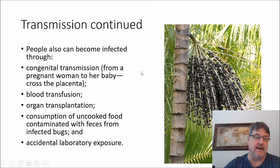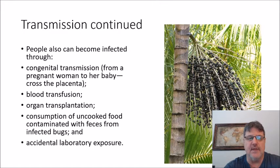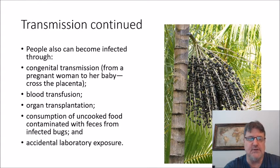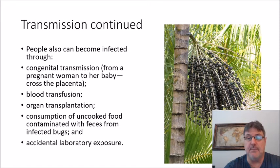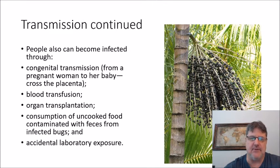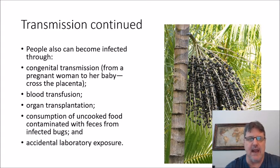You can also become infected through congenital transmission, because this parasite can cross the placenta — from the pregnant woman to her baby. Blood transfusion, organ transplants, and consumption of uncooked food contaminated with feces from infected bugs are other routes. We see this in South America where people become infected after eating açaí berries — the bugs get squashed into juice and the feces are ingested. Accidental laboratory exposure is also possible, though quite rare.